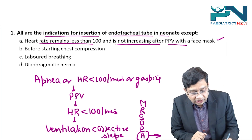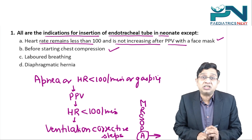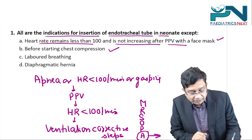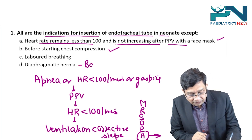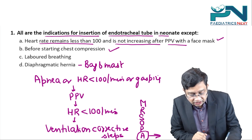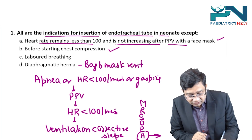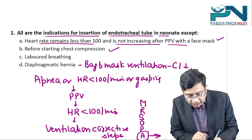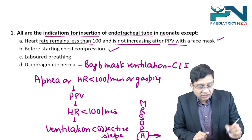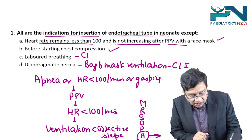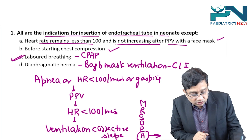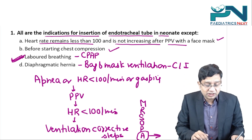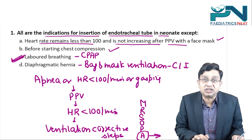Before starting chest compressions, this is also an indication. In diaphragmatic hernia, bag and mask ventilation is contraindicated, so we need to put an endotracheal tube. But in labored breathing, we start with CPAP. So the right answer is: for labored breathing, the endotracheal tube is not inserted.